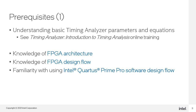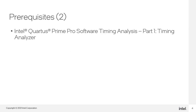Here are the recommended prerequisites for this course: an online training called Time Analyzer Introduction to Timing Analysis, found on the Intel FPGA YouTube channel or on the Intel FPGA Training website; knowledge of FPGA architecture and the design flow; and familiarity with the Intel Quartus Prime Pro software. If you haven't done so already, check out our previous courses listed here in this series of online trainings.